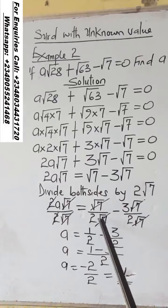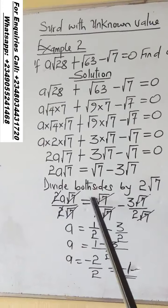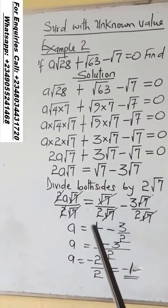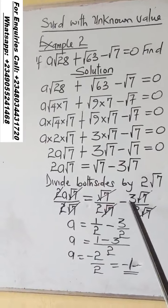This root 7 cut root 7, it will be left with 1 over 2. There is 1 at the top here, so it will be 1 over 2. Root 7 cut root 7, it will be 3 over 2.